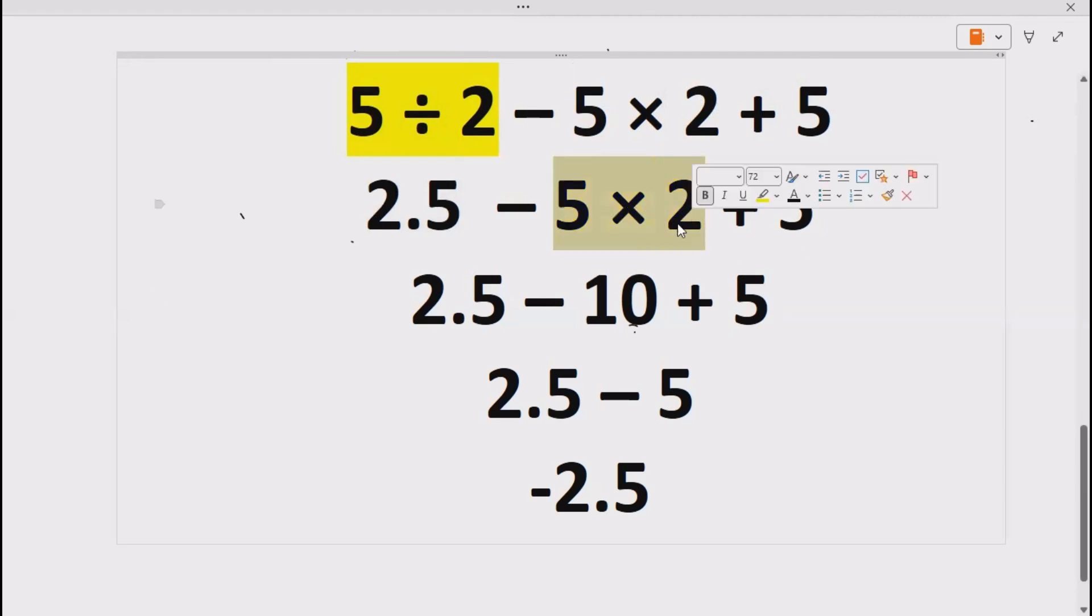Now we have to do this multiplication according to BODMAS or PEDMAS. 2.5 minus 5 into 2 gives us 10 plus 5.